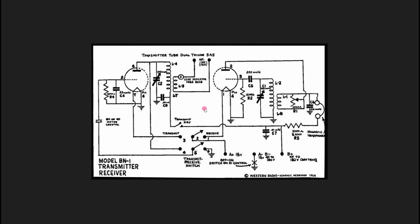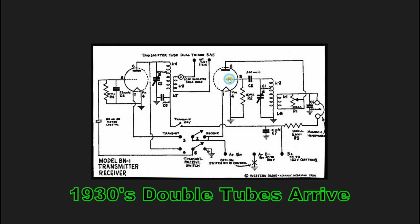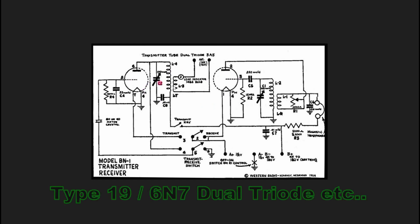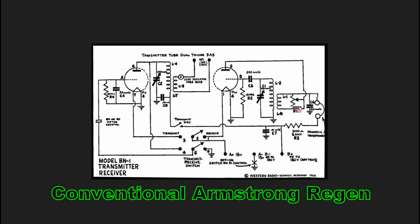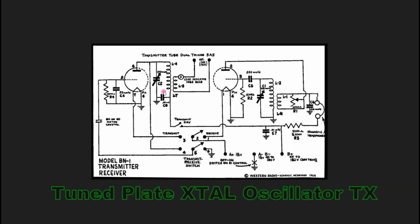Now, in the 30s, we started to get some double tubes with two triodes, for instance. And Frank Jones and many other people were using these dual triodes for all kinds of interesting circuits. And one of them that came out of the 30s was the idea of using half of the tube as your receiver and half of the tube as your transmitter. This is a very simple Armstrong receiver with a tickler coil. This is a very simple tuned plate crystal oscillator transmitter. And with this switch, here you go. You've got a simple one tube transmitter receiver.